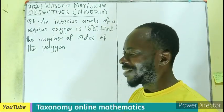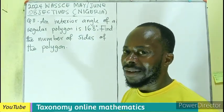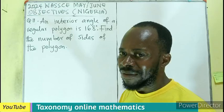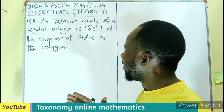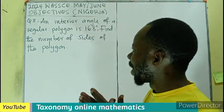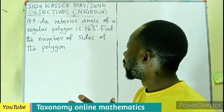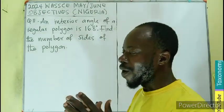Welcome to another episode on WASSCE 2024 objective test questions for Nigeria, question 11. An interior angle of a regular polygon is 168 degrees. We have to find the number of sides of the polygon.